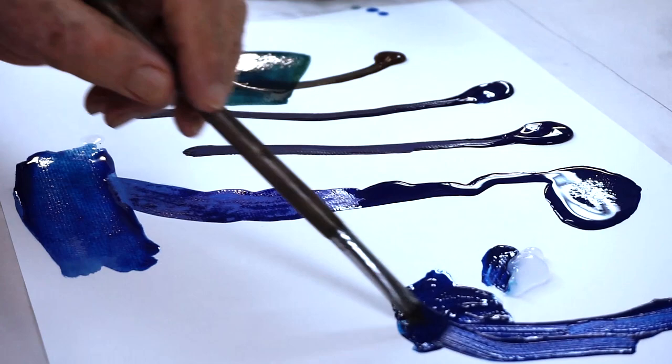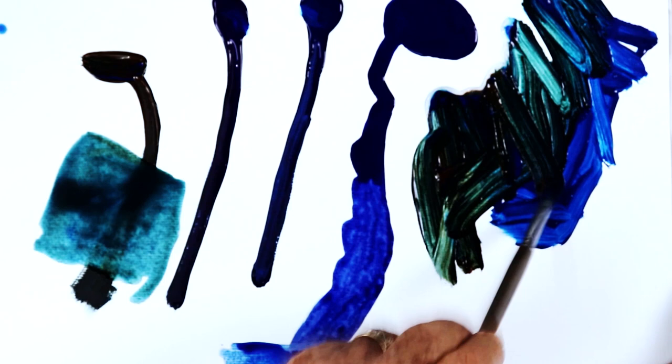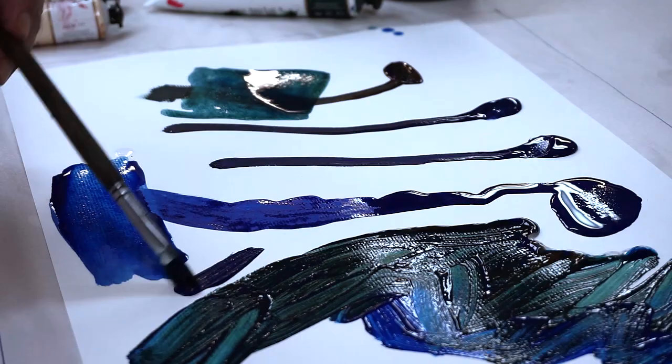The heavy bodied holding medium gives you a painterly effect which you might want to incorporate into the smoother painting styles that are usually connected with the use of these more flowing paints. So it gives you versatility towards heavy bodied paint without being heavy bodied and maintains the matte finish.